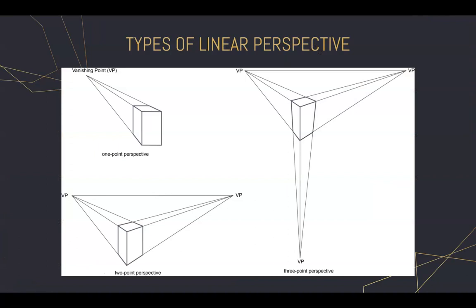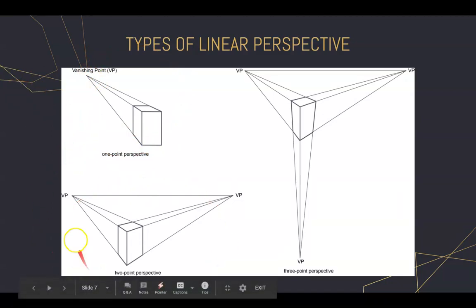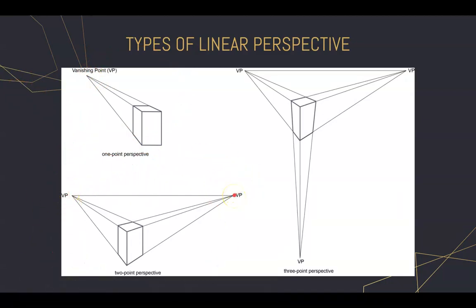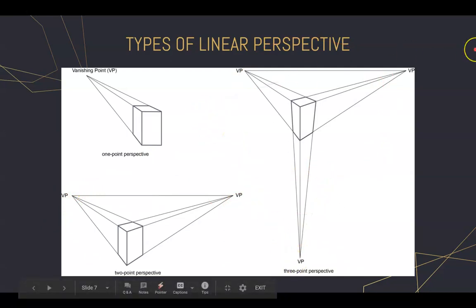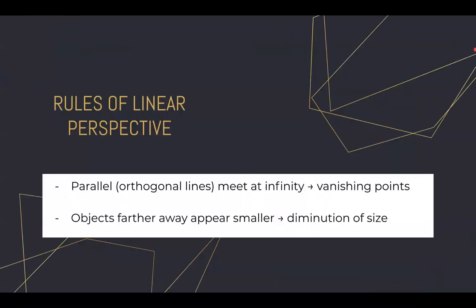In art, there are three types of commonly used perspective: one point perspective where there is one vanishing point, two point perspective where there are two vanishing points, and three point perspective where there are — you guessed it — three vanishing points. The rules of linear perspective are simple at first glance. There are only two: parallel orthogonal lines meet at infinity and create vanishing points, and objects further away appear smaller, which is the concept of diminution of size.